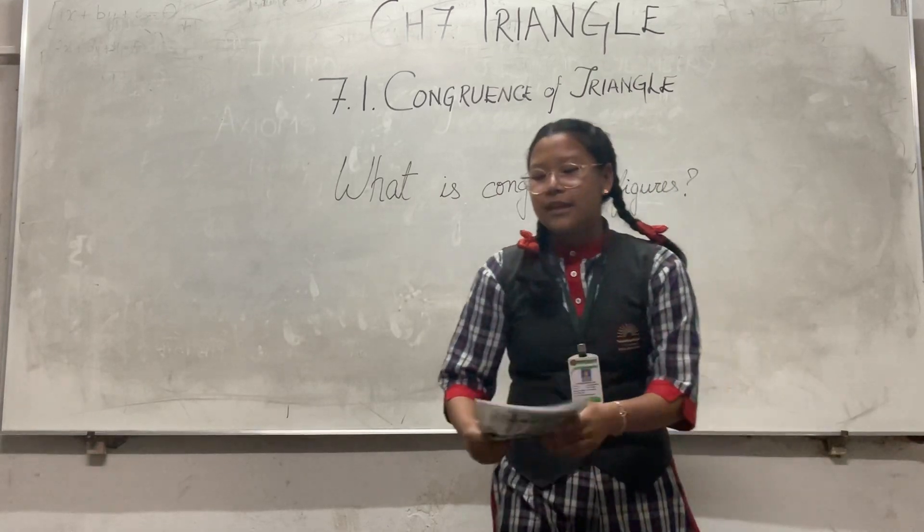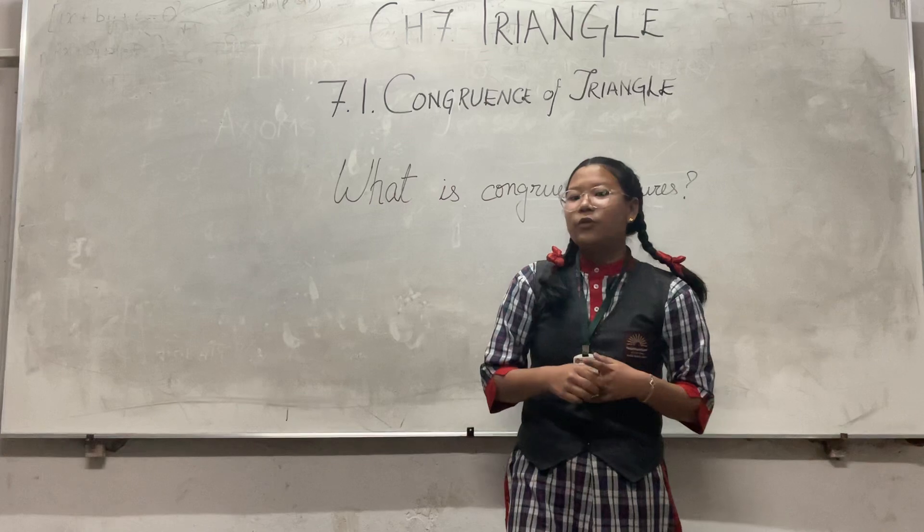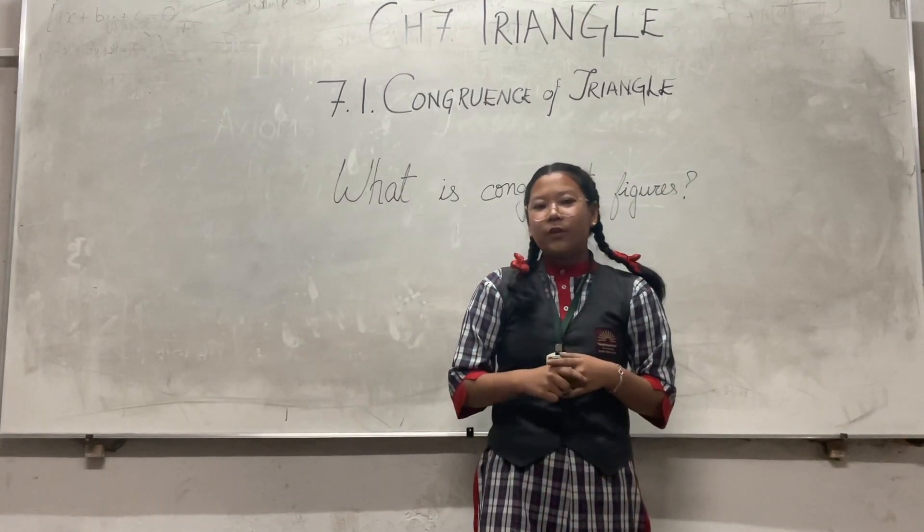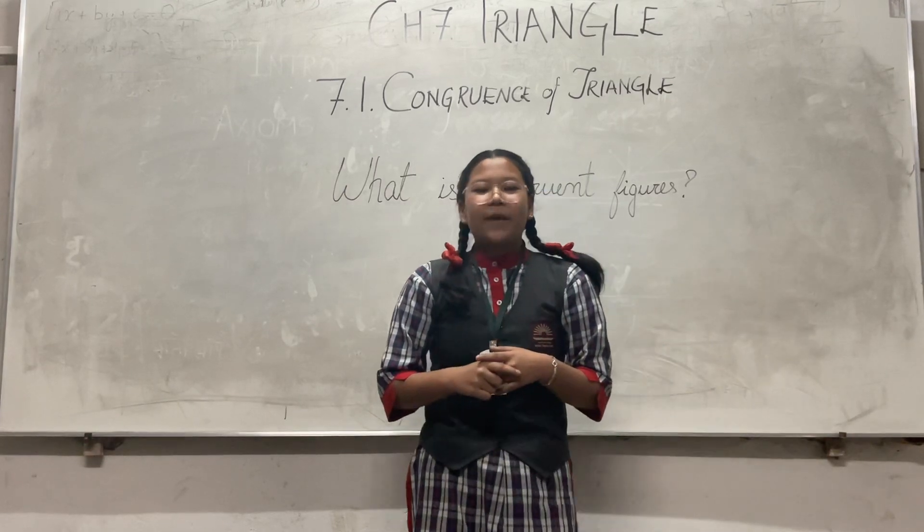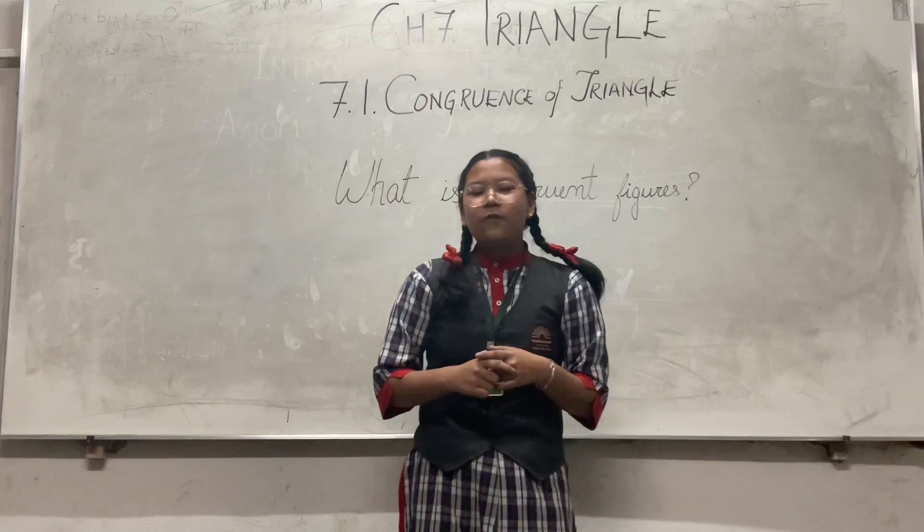If we take two triangles and if they coincide, then it is congruence of triangles. There are many examples of congruent figures, such as your pairs of shoes, your bangles, earrings, pages of notebooks, etc.